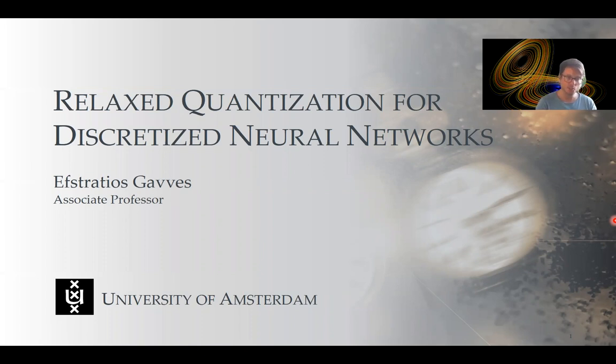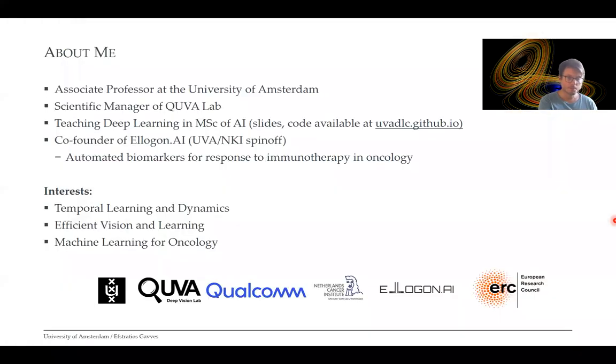Today I would like to discuss quantization and discretized neural networks. A few words about me: I'm an associate professor at the University of Amsterdam and also a scientific manager of the QUVA lab and co-director together with Professor Snoek and Professor Max Welling. I'm teaching the deep learning course in the Masters of AI at the University of Amsterdam and all my material is available online. I'm also a co-founder of the Elogon AI spin-off. My interests are temporal learning and dynamics, efficient vision and learning, and machine learning for oncology.